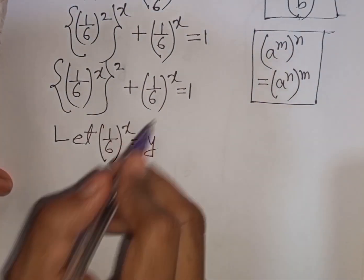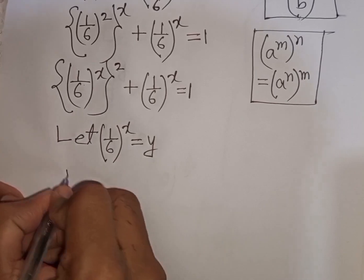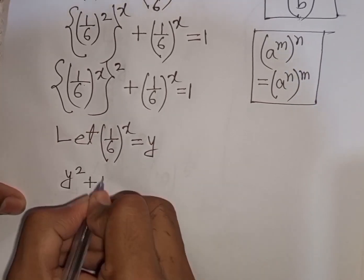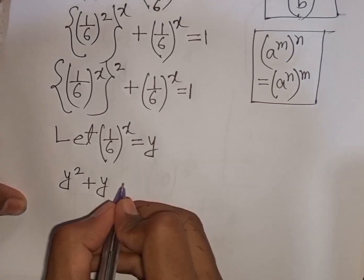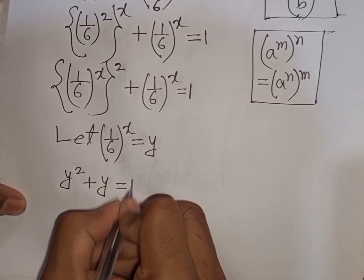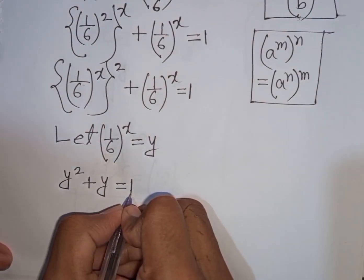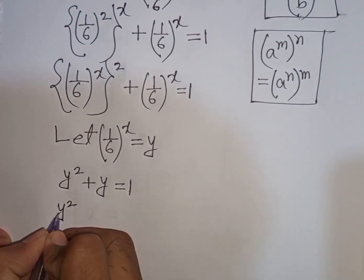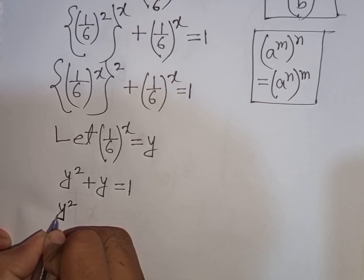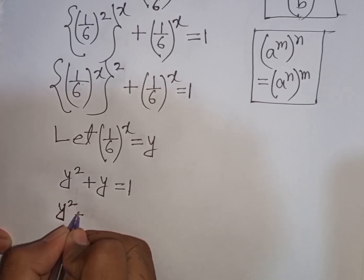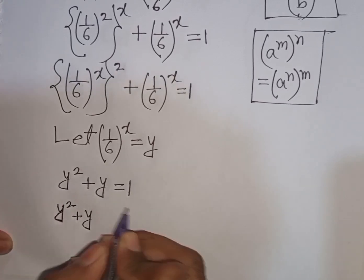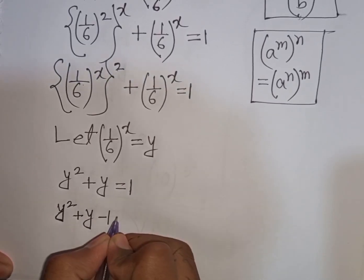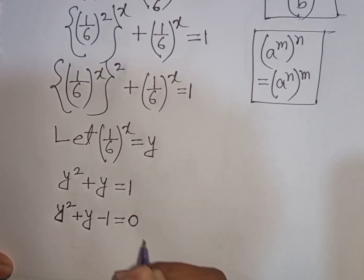So our equation will be y squared plus y equals 1. We can rewrite this as y squared plus y minus 1 equals 0.